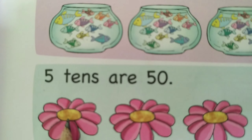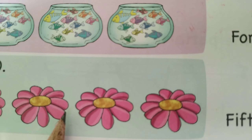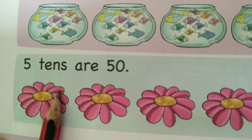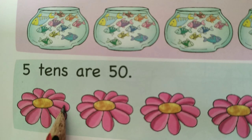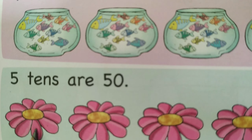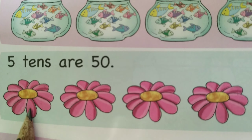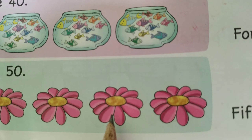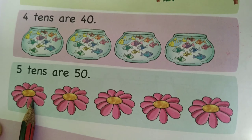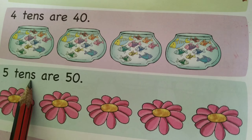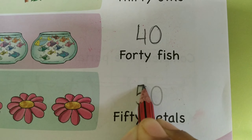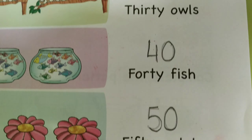Next, you see here flowers. How many flowers? Five flowers. And each flower has got petals — these are called petals — and there are ten petals in each flower. One, two, three, four, five. So five tens — that means fifty petals. Five tens are fifty. We write: fifty petals.